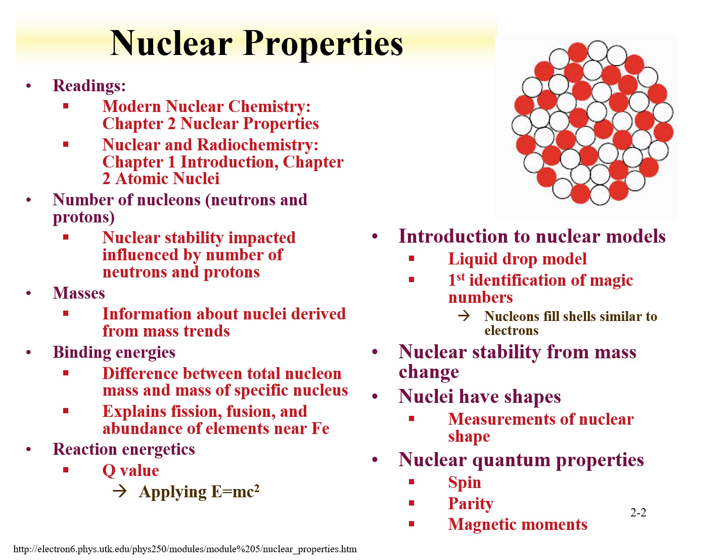We're going to talk about nuclear stability from mass change, and we're also going to introduce the concept that nuclei have shape. Most nuclei are spherical, however we're going to introduce the concept that nuclei are actually not spherical. The implications for nuclear properties, nuclear stabilities, and radioactive decay stem from differences in the nuclear shape. We'll use this baseline information throughout the course.